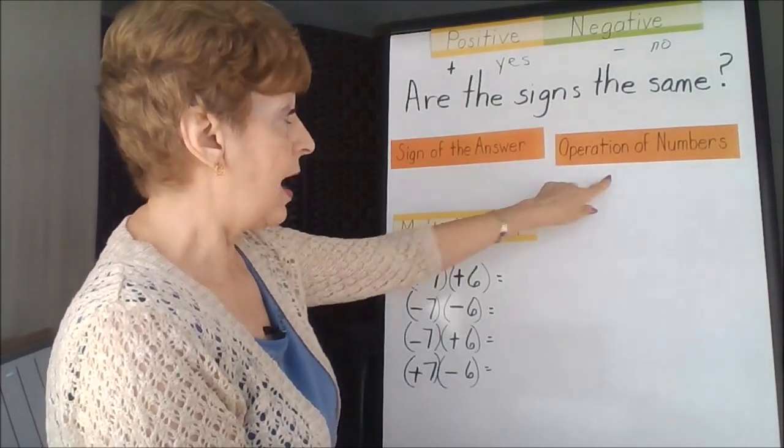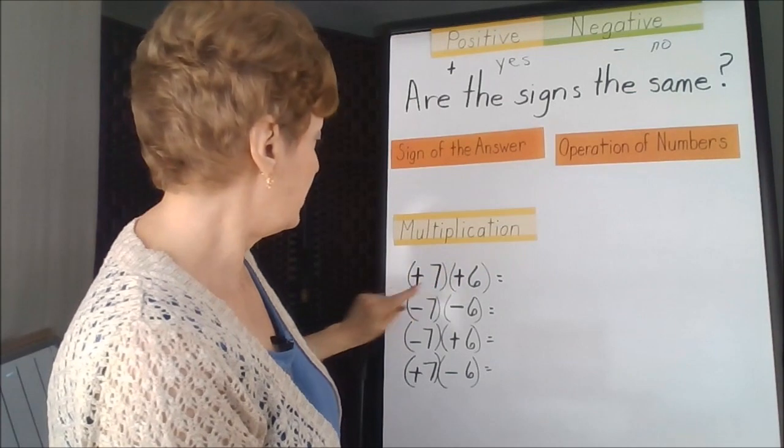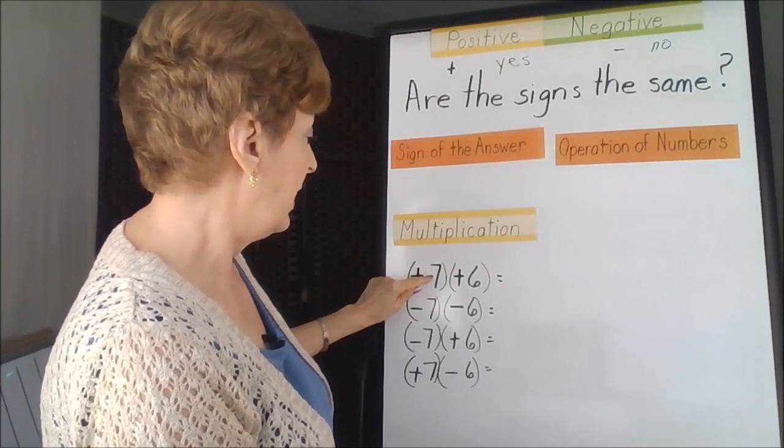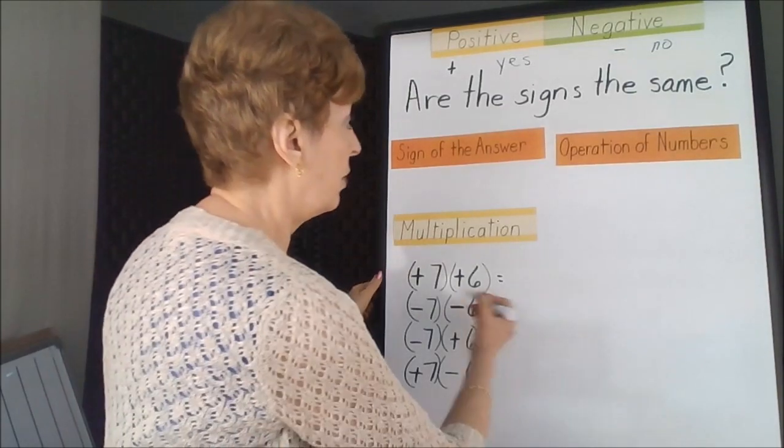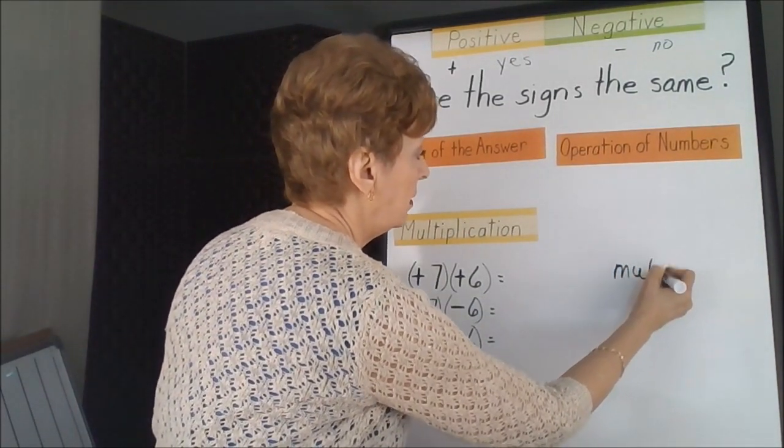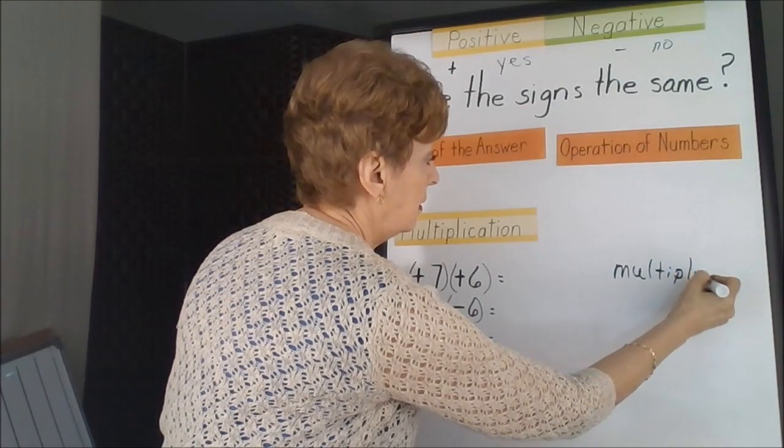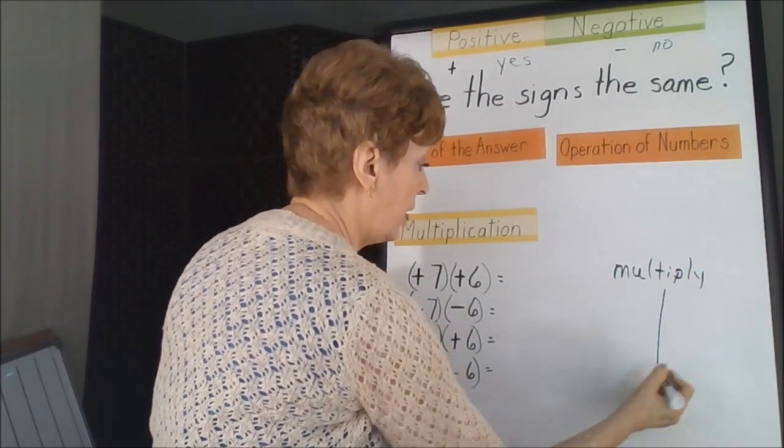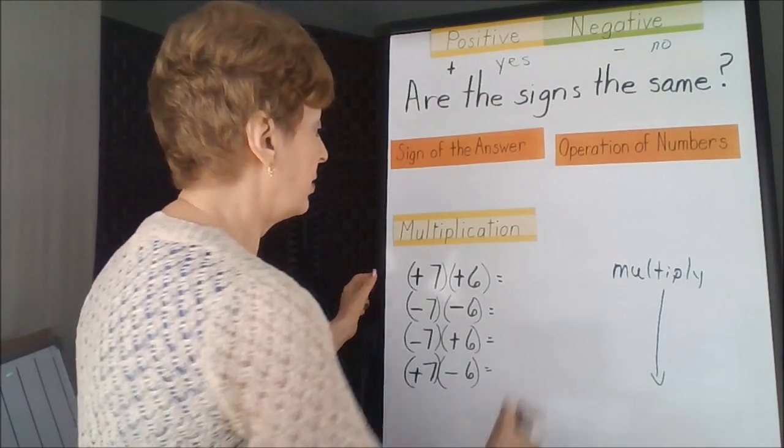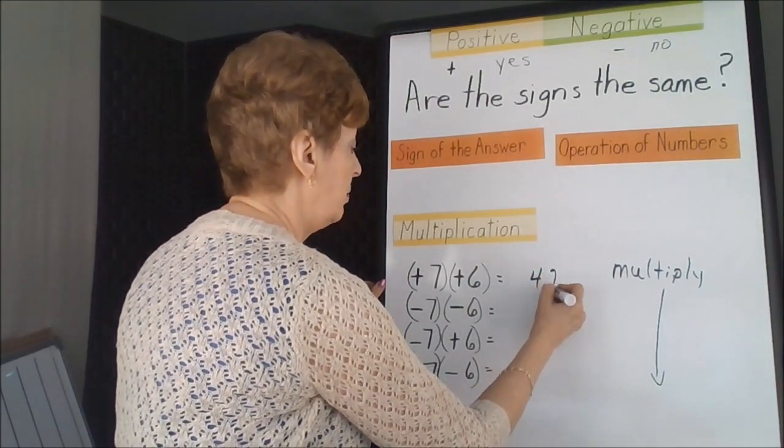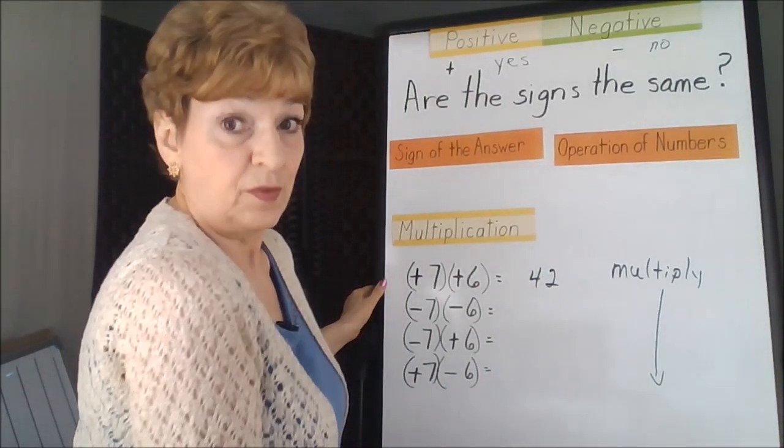When you do the operation of the numbers, what you do is multiply them. We're going to multiply the numbers. So this is going to be multiply for all four of those. When you multiply these together, you're going to get 42 because seven times six is 42.